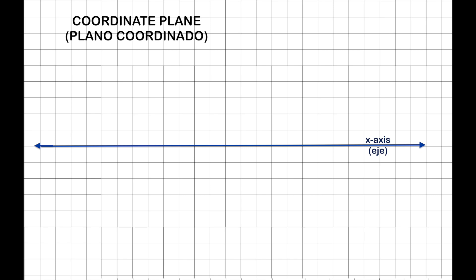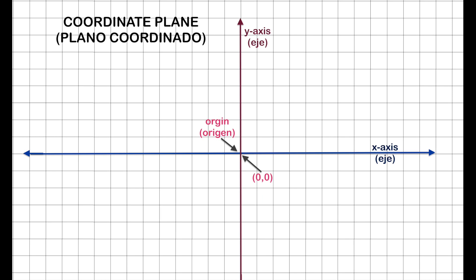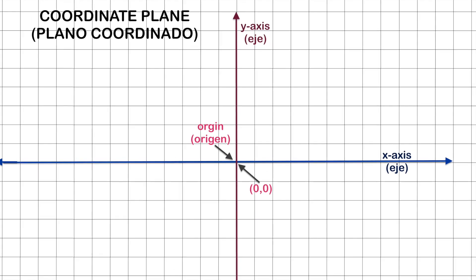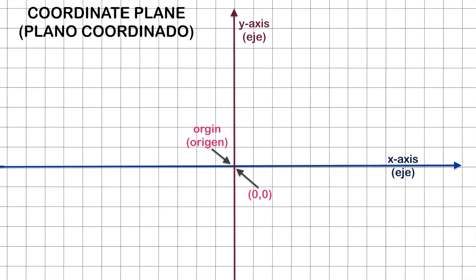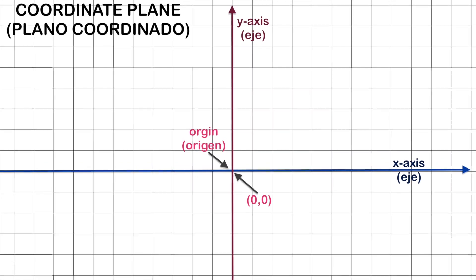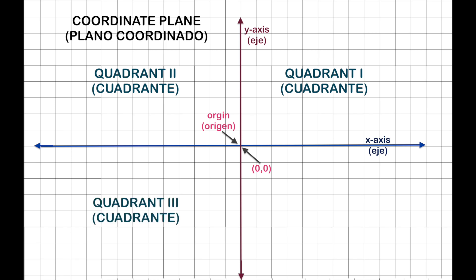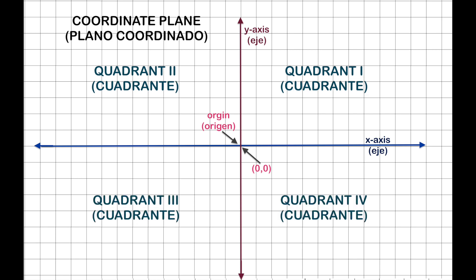The coordinate plane contains a horizontal line called the x-axis and a vertical line called the y-axis. Their intersecting point is called the origin, with coordinates of 0, 0. Four quadrants are formed from this intersection, labeled with Roman numerals counter-clockwise.